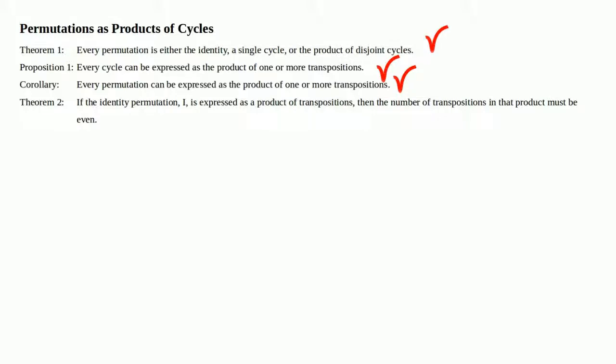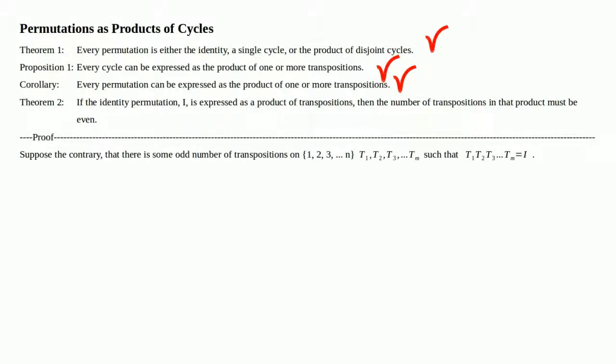Let's start the proof. Suppose the contrary: that there exists some odd number of transpositions on the set 1 through n — call them t₁ through t_m — such that the product t₁ · t₂ · … · t_m equals the identity permutation. Basically, we're assuming it's not true, that we can assemble some odd number of transpositions whose product is the identity.